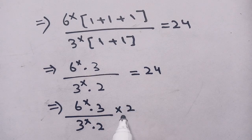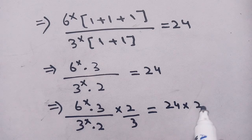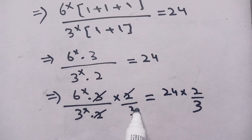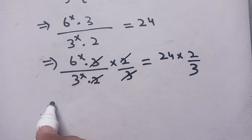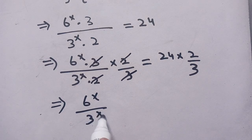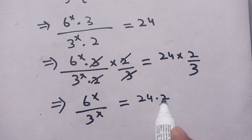Multiplying both sides by 2/3, we get 6^x divided by 3^x is equal to 24 times 2 divided by 3. We can cancel the 2s and the 3s, leaving the equation 6^x divided by 3^x is equal to 24 × 2/3.